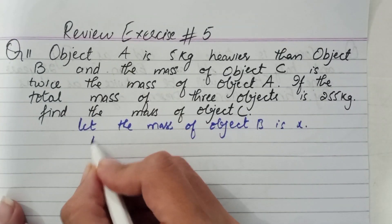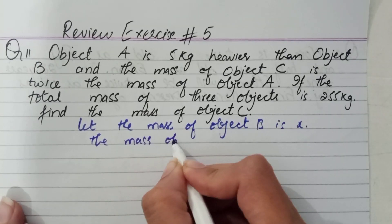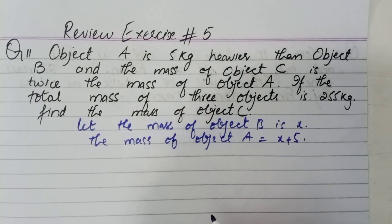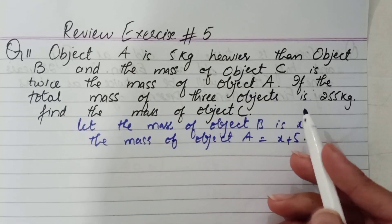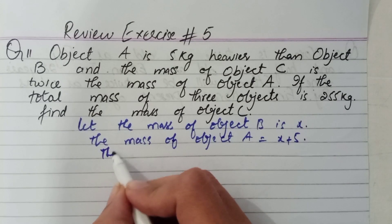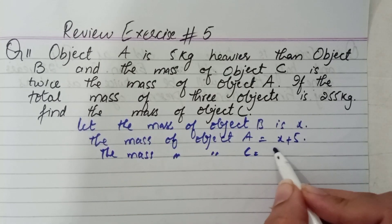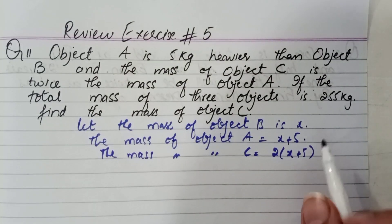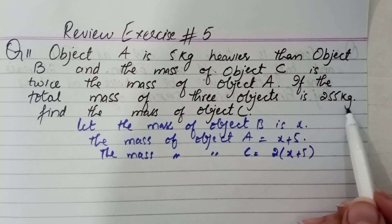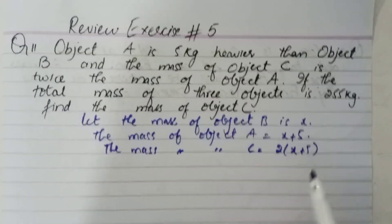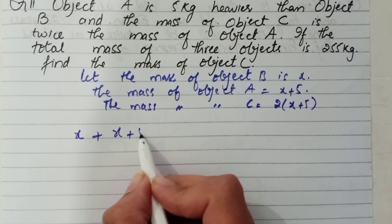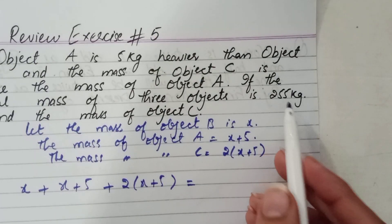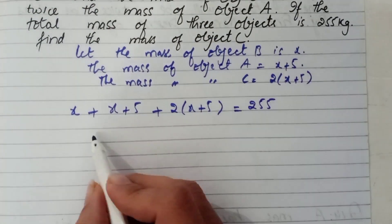The mass of object C is twice the mass of object A, meaning it is double — so object C = 2(x + 5). The total mass of the 3 objects is given as 255 kg, and we need to find the mass of object C. So we add: x + (x + 5) + 2(x + 5) = 255.